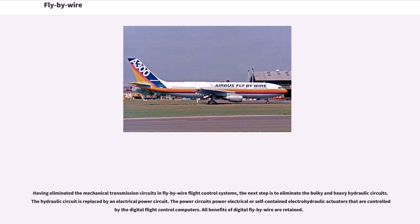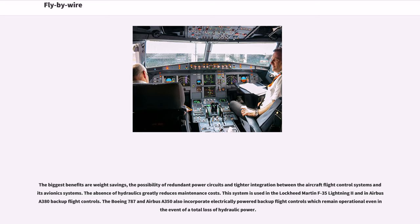Having eliminated the mechanical transmission circuits in fly-by-wire flight control systems, the next step is to eliminate the bulky and heavy hydraulic circuits by replacing them with an electrical power circuit. The power circuits power electrical or self-contained electro-hydraulic actuators controlled by the digital flight control computers. All benefits of digital fly-by-wire are retained, with the biggest benefits being weight savings, the possibility of redundant power circuits, and tighter integration between flight control and avionics systems. The absence of hydraulics greatly reduces maintenance costs. This system is used in the Lockheed Martin F-35 Lightning II, Airbus A380 backup flight controls, Boeing 787 and Airbus A350.